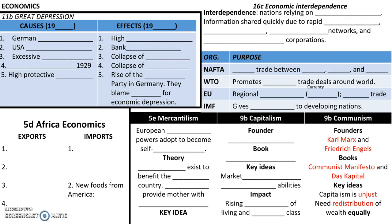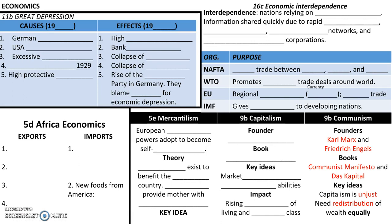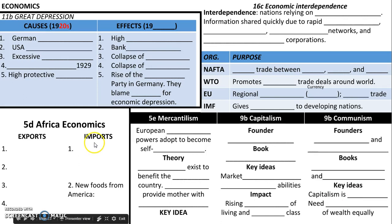You'll see 1920s — that's what decade the causes happened. Remember the CRASH acronym. You might already remember the CRASH acronym, which I hope you do, because that's really what's going to tell you that it would happen. Some of you might already be writing the stuff in and that's great. The 1920s are when the Great Depression causes happened.